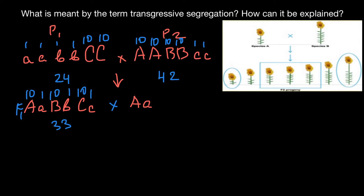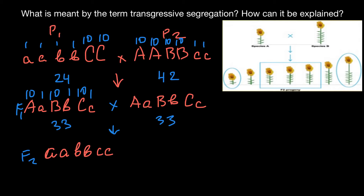Now imagine that we self-pollinate these F1 plants, meaning we cross plants of the same genotype — either through self-pollination or by crossing two F1 plants with identical genotypes. In the resulting F2 generation, we expect a range of different genotypes, for example starting from small a, small a, small b, small b, small c, small c all the way to capital A, capital A, capital B, capital B, capital C, capital C.